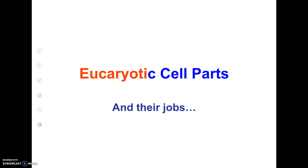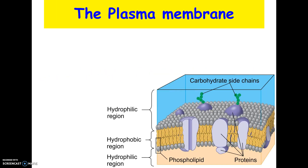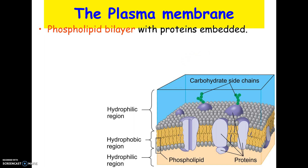Now we're going to start getting into the different parts of eukaryotic cells and what they do. The first cell part we're going to talk about is the cell membrane. Both prokaryotic cells and eukaryotic cells have a cell membrane or plasma membrane, and it is composed of a phospholipid bilayer.